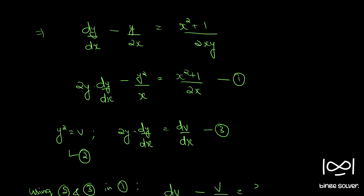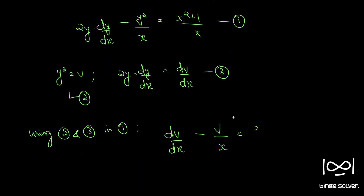There is another correction here — since we multiplied by 2y, the right-hand side is just x on the denominator. So (x squared plus 1)/x can be written as x plus 1/x.